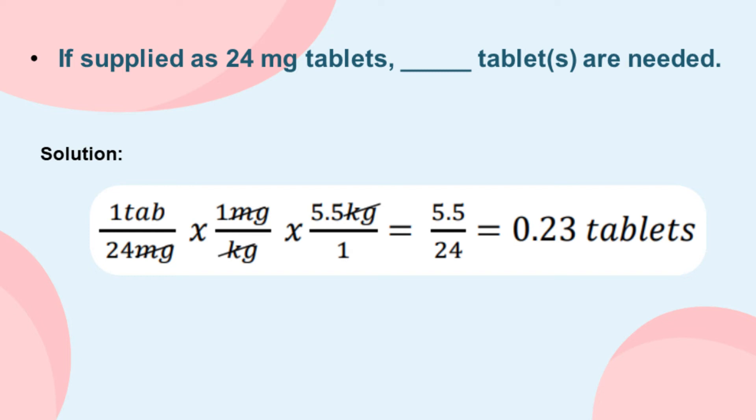Let's try another tablet size for the same cat. If supplied as 24-milligram tablets, how many tablets are needed? We use the same formula. Identify the given: the weight, the dose, and the milligrams of tablets supplied. Substitute the given into the formula, cancel out terms, multiply, and divide. If supplied as 24-milligram tablets, 0.23 tablets are needed.